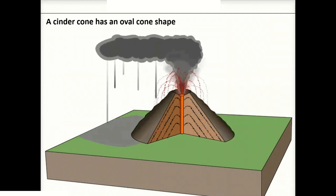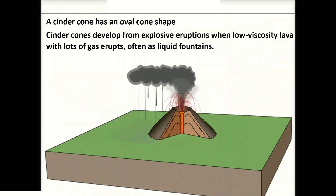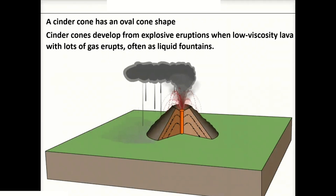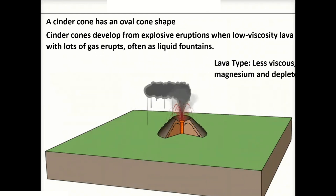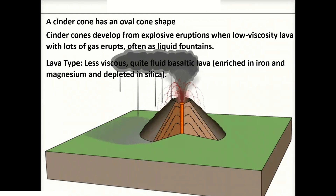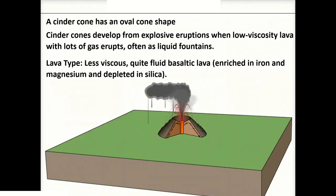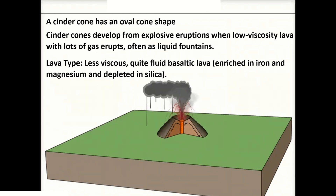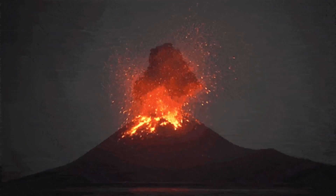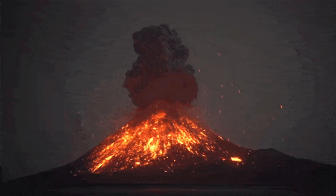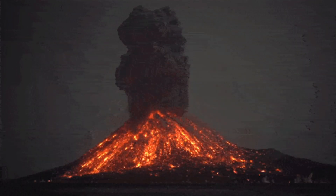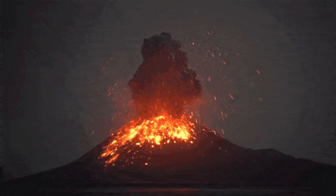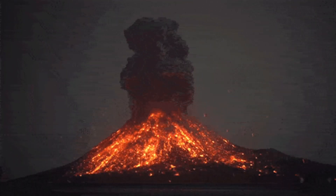A cinder cone has an oval cone shape. They develop from explosive eruptions when low-viscosity lava with lots of gas erupts, often as liquid fountains. The lava type is less viscous, quite fluid basaltic lava. When the lava erupts, cinders of it are blown into the air. These fragmented cinders fall a short distance from the opening, thus creating the cone.